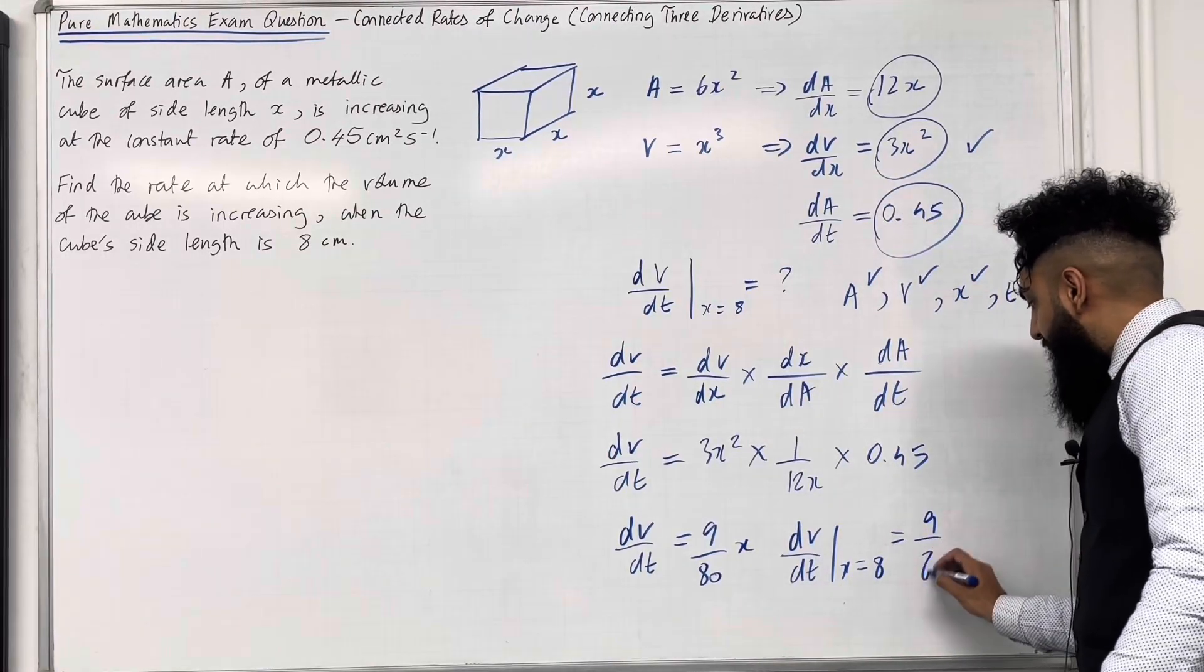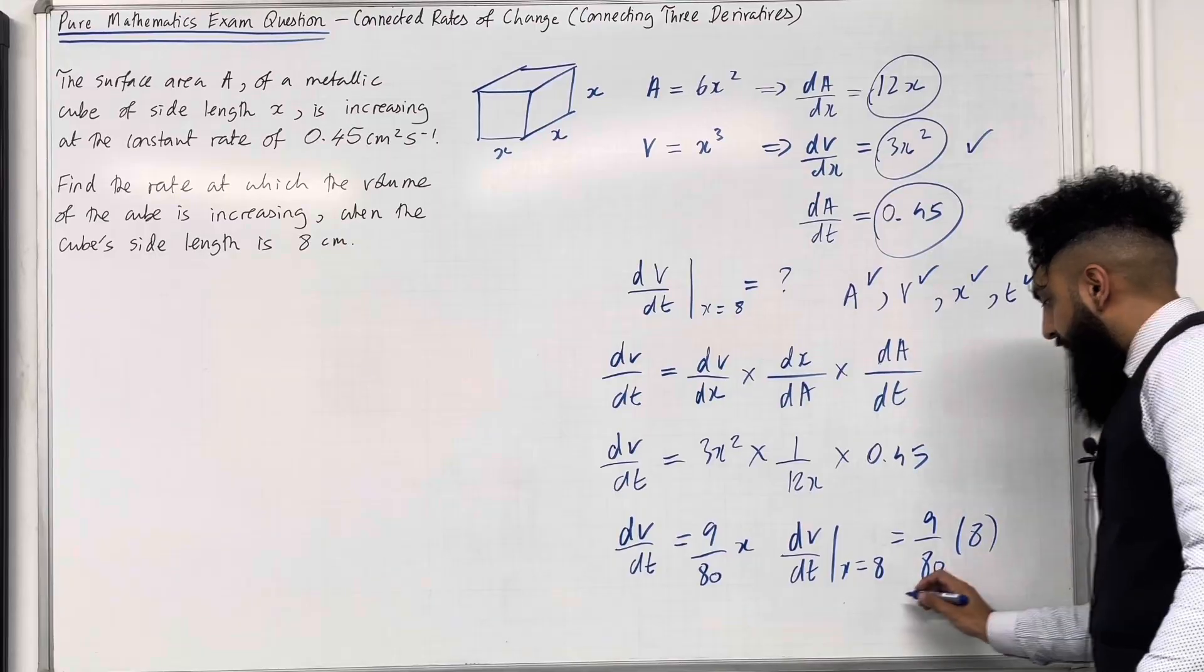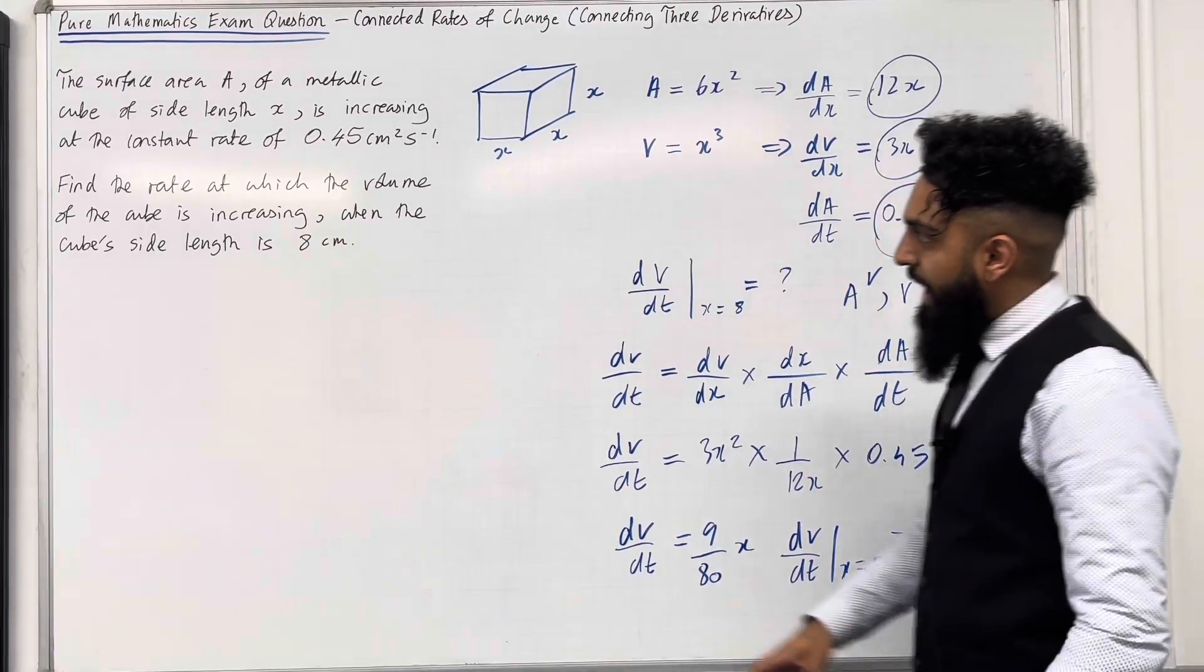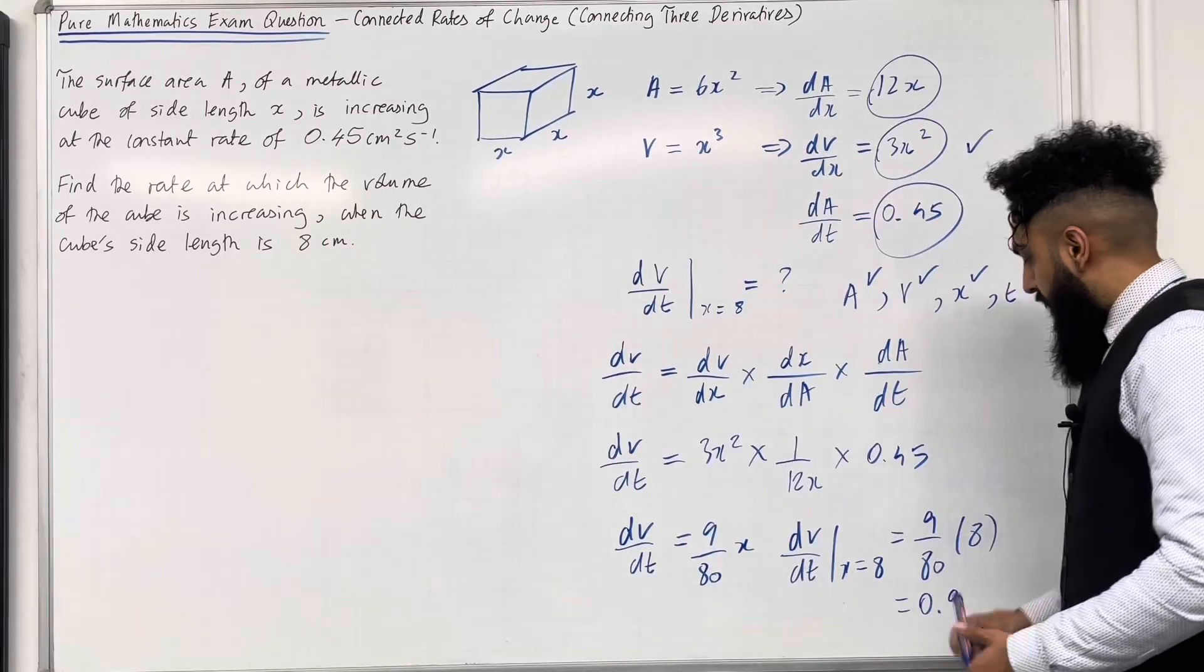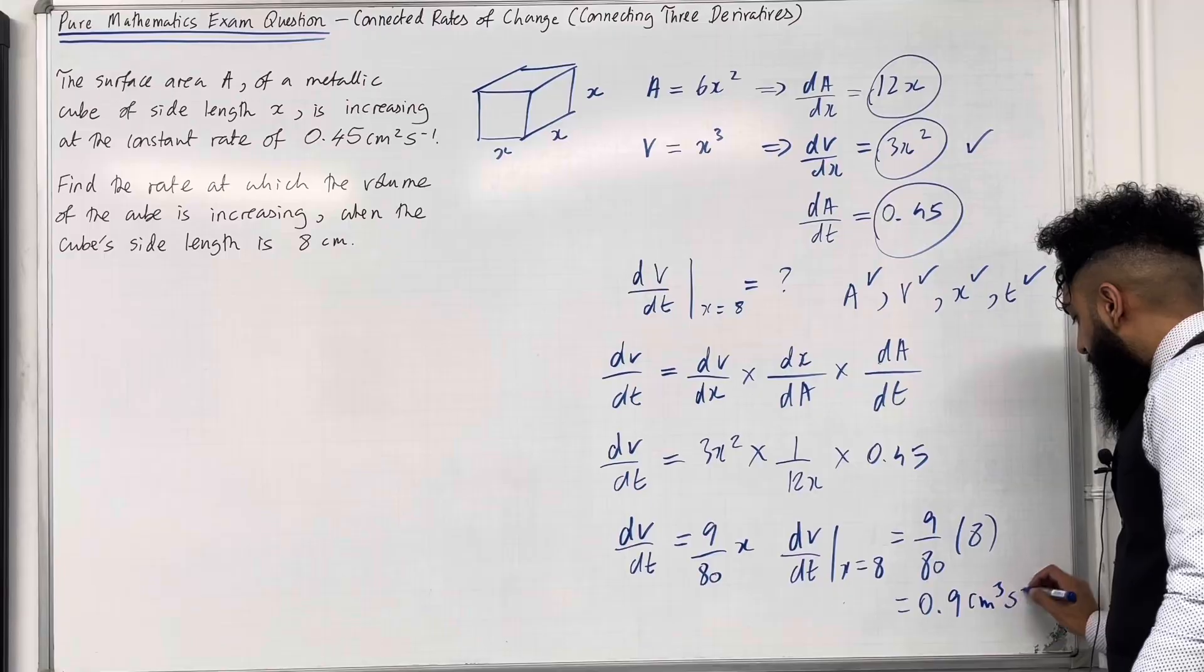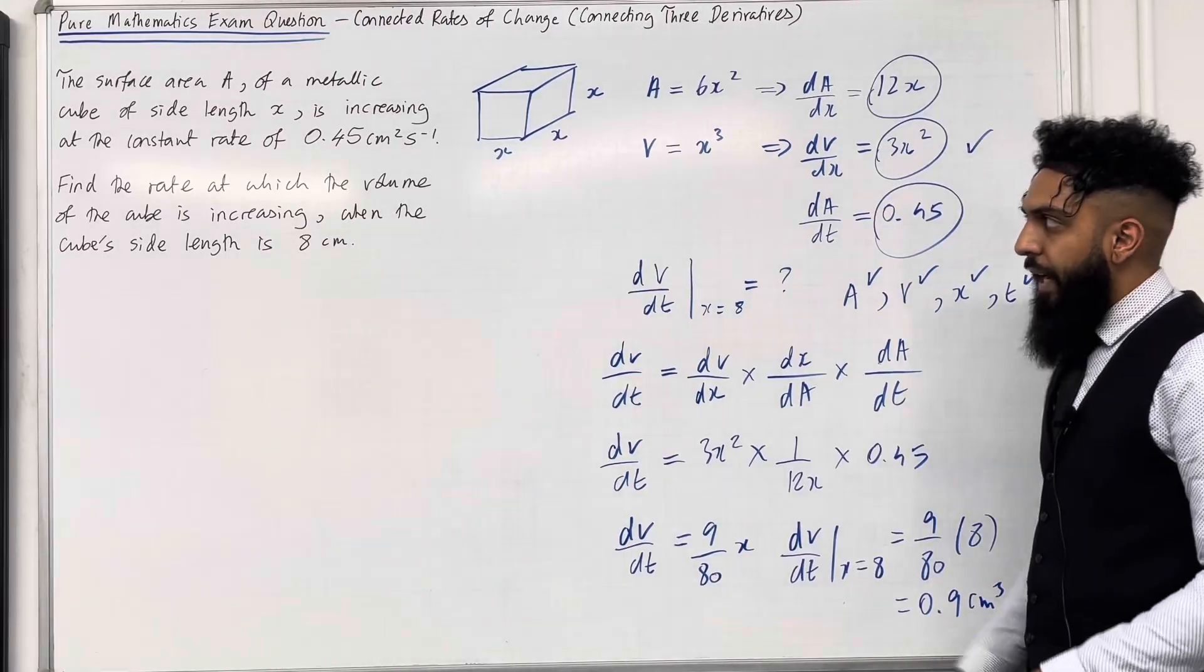This will equal 9 over 80, multiplied by 8, giving me precisely 0.9. Because we're working out the rate at which the volume of the cube is increasing, the unit will be centimeter cubed per second. That is the final answer.